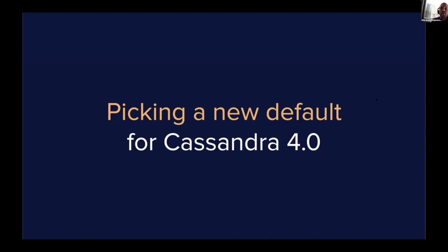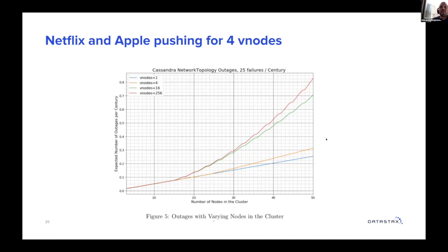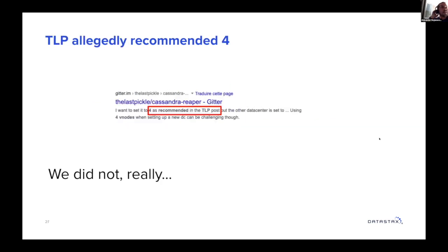There's been a discussion recently on picking a new default for Cassandra 4. Netflix and Apple are pushing for four vNodes because there was a paper from Netflix showing that with 256 vNodes you could get 2.98 outages per century, but with four vNodes it's 0.35 — they have graphs showing fewer outages per century. DataStax apparently recommends eight, which could be per DC. And allegedly we recommended four in one of our blog posts, which we did not — it was just used as an example, although we had one consultant very keen on pushing four, which he still does at Apple.